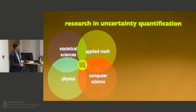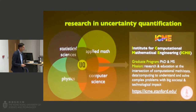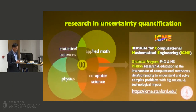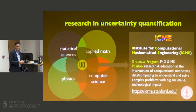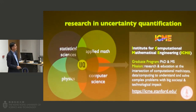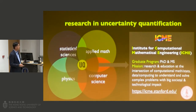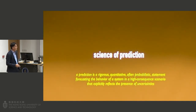Interestingly, these same four disciplines are part of what we do at ICME — the Institute for Computational and Mathematical Engineering, a graduate program at Stanford that issues masters and PhDs. The mission of the institute is research and education at the intersection of these disciplines to understand problems with both technological and societal impact, including work in social sciences and medicine. If you're interested, please visit our website or contact me for more information.